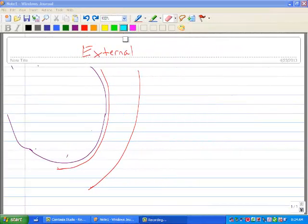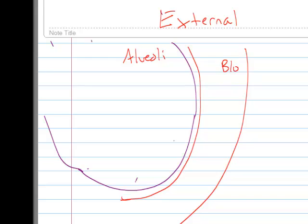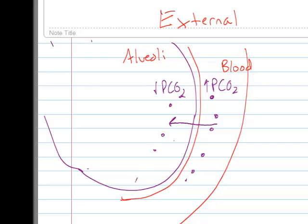If this is the alveoli of the lungs and this is the capillaries of the blood — there's more CO2 building up in the blood, ready to be taken out by the lungs. Since we're inhaling, there wouldn't be much CO2 in the alveoli. So the partial pressure of CO2 in the blood is high and in the lungs it's low, which causes CO2 to diffuse across the membrane into the lungs where it can be exhaled.